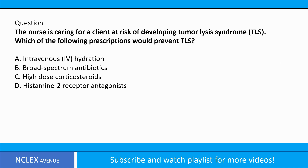The nurse is caring for a client at risk of developing tumor lysis syndrome (TLS). Which of the following prescriptions would prevent TLS? A. Intravenous (IV) hydration. B. Broad-spectrum antibiotics. C. High-dose corticosteroids. D. Histamine-2 receptor antagonists.